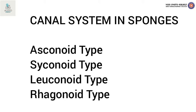The spongocoele opens to the exterior by a single terminal osculum. The wall between the incurrent and radial canals is perforated by numerous minute prosopyles. The syconoid type has two stages: an early stage and a final stage. The early stage is simple and is found in a few calcareous sponges.